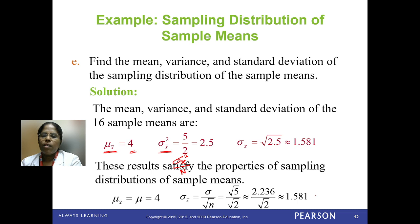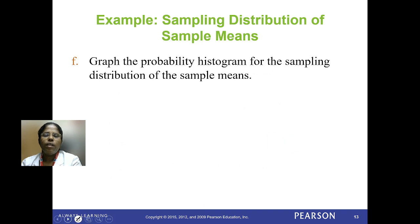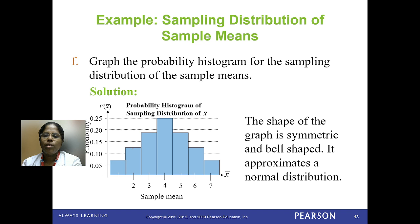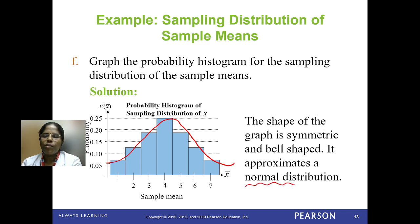These results satisfy the properties of the sampling distribution of the sample mean. By using the formula and the values, you get the same results both ways. Graphing the probability histogram for the sampling distribution of the sample mean, you get a histogram that approximates the normal distribution. The shape is symmetric and looks like a bell shape — it approximates the normal distribution.